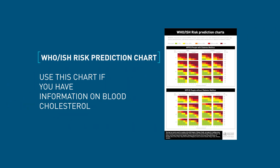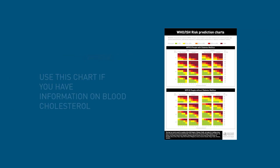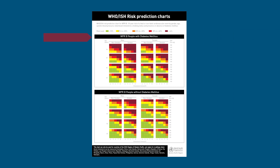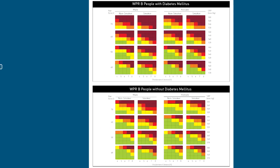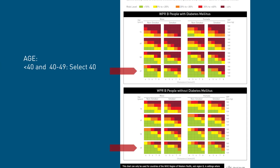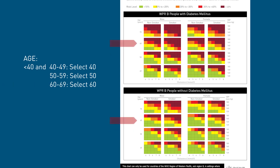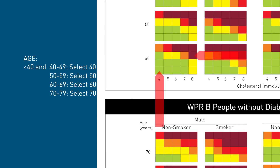If you have information on blood cholesterol, use the cholesterol chart. First, select the appropriate chart depending on the presence or absence of diabetes. Second, select the male or female table. Third, select the smoker or non-smoker box. Fourth, select the age group box: if age is 40 to 49 years or below 40, select 40; if age is between 50 and 59 years, select 50; if age is between 60 and 69 years, select 60.